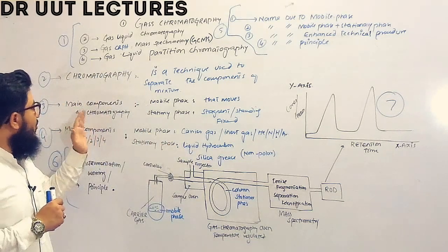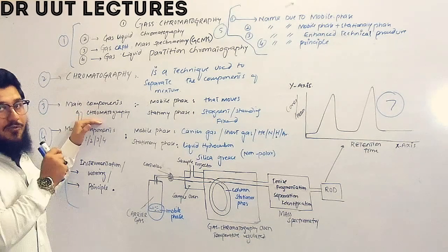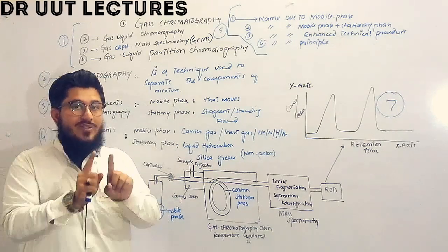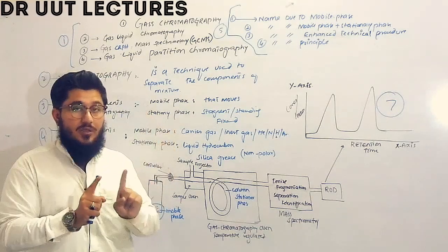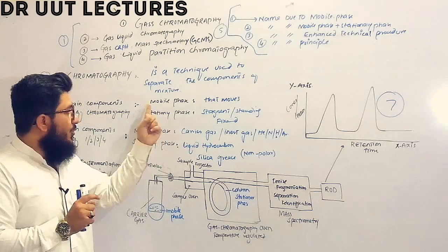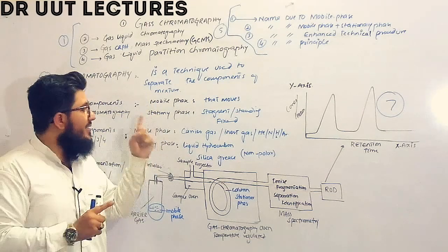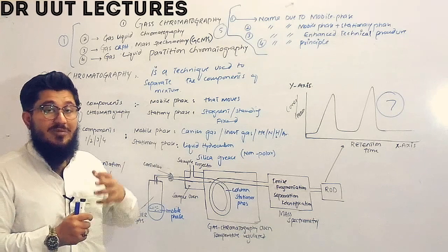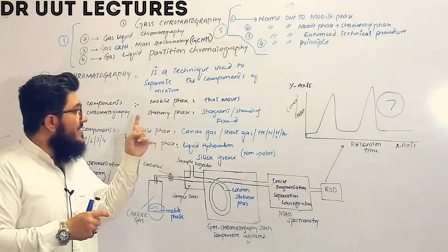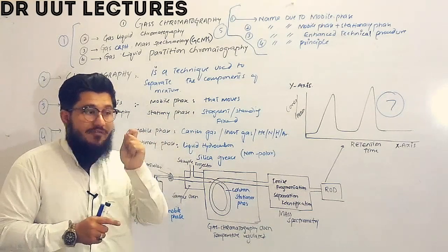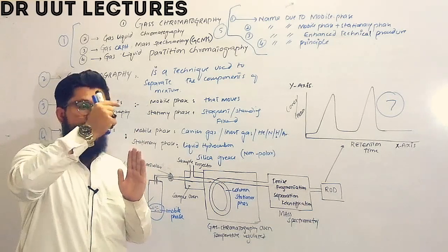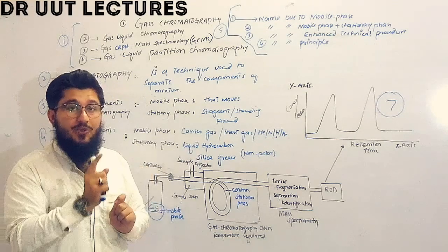The third point covers the main components of any type of chromatography. The two most important components responsible for separating a mixture are the mobile phase and the stationary phase. The mobile phase moves, while the stationary phase is fixed. These two phases work together to separate a mixture into its different components.